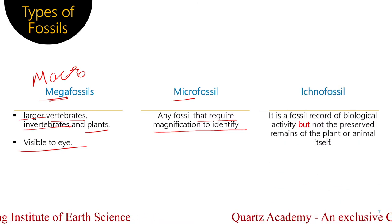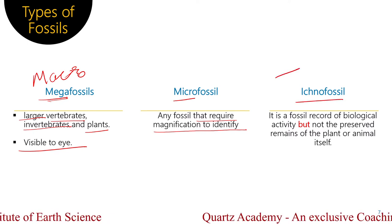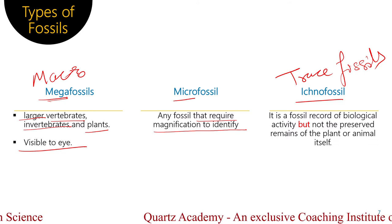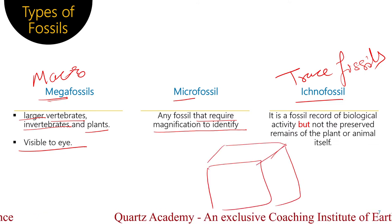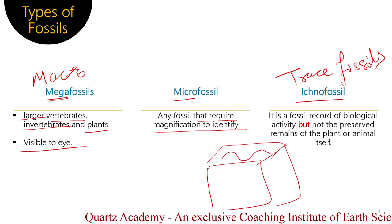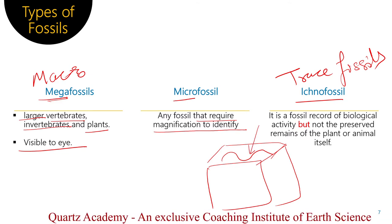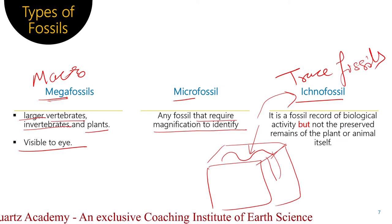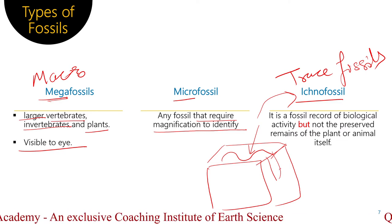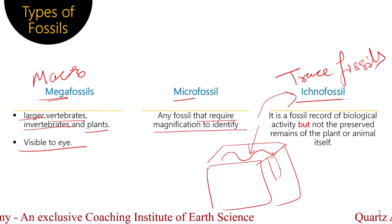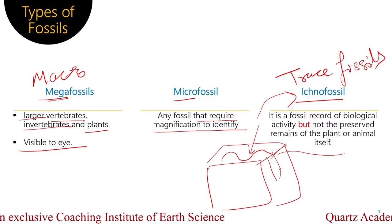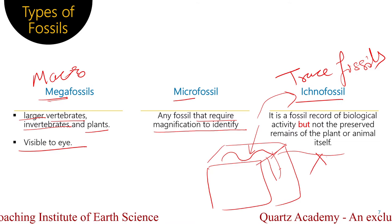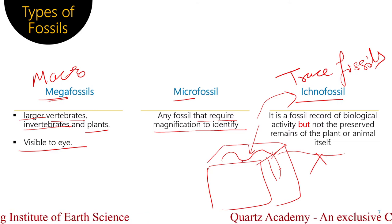The last type is Ichnofossil, also known as Trace fossil. It is a fossil record of biological activity. In the past, if any organism or any animal had some locomotion, that locomotive activity is known as Ichnofossil. If that organism burrows or creates a boring, that burrowing thing is also called as Ichnofossil. Remember, the animal left behind some activities or traces of activities — that activity which is left behind is simply called as Trace fossil or Ichnofossil.